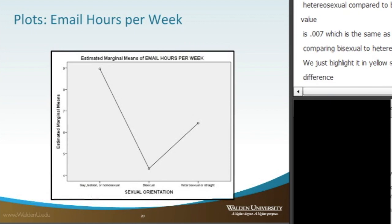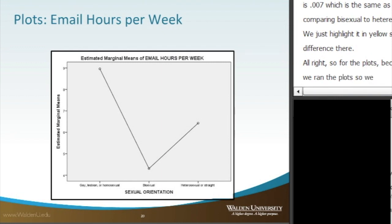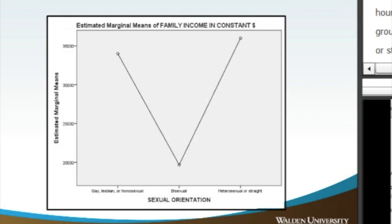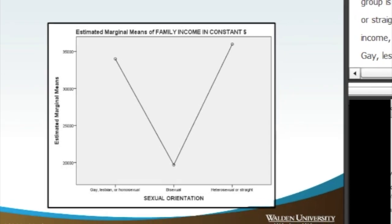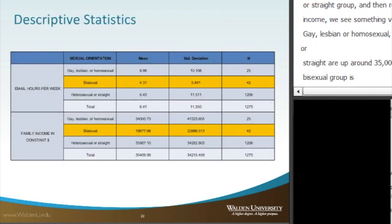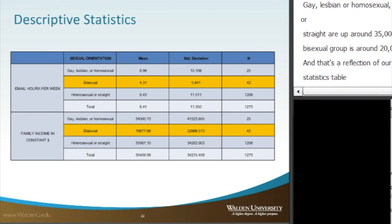Looking at the plots, for email hours per week the bisexual group is quite a bit lower than the heterosexual/straight group. For family income, we see something very similar: gay/lesbian/homosexual and heterosexual/straight are up around $35,000 annually, while the bisexual group is around $20,000. This is a visual reflection of the descriptive statistics table.